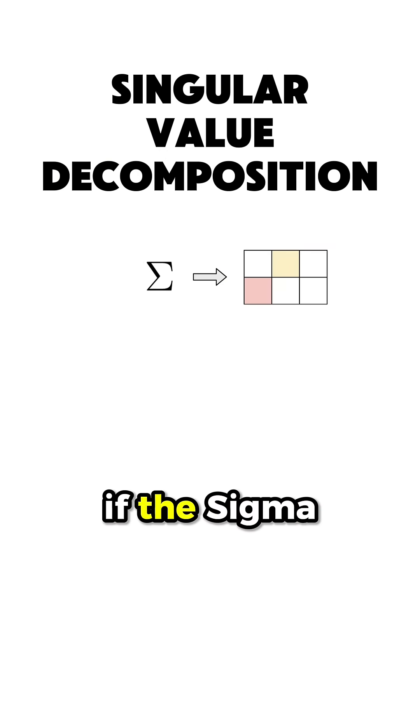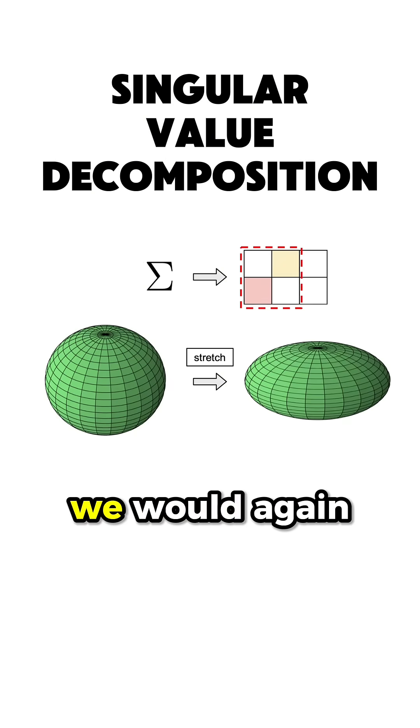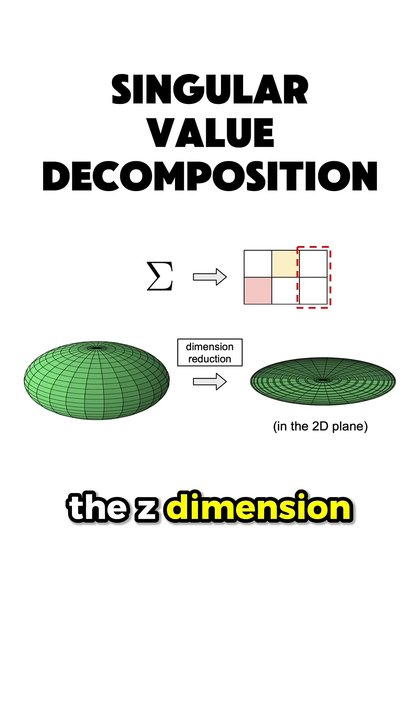On the other hand, if the sigma matrix had the following form, so a 2x3 matrix, and we would use the following sphere in the 3D space, we would again stretch along the x and y dimensions, and then remove the z dimension.